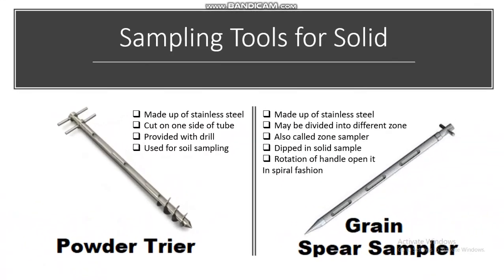Sampling tools for solids: We can use the powder dryer, which is made up of stainless steel, has a cut at one side of the tube, is provided with a drill, and is used mostly for soil sampling. The spear sampler or grain spear sampler is made up of stainless steel and may be divided into different zones, so it is also called a zone sampler. It is dipped inside the solid material and different zones can be collected — rotation of the handle opens it in a spiral fashion, opening different zones at different times.